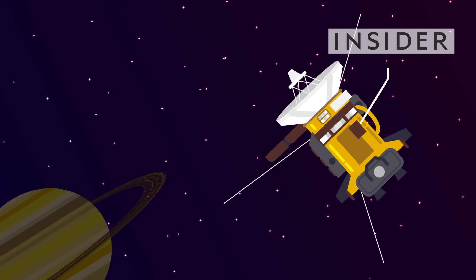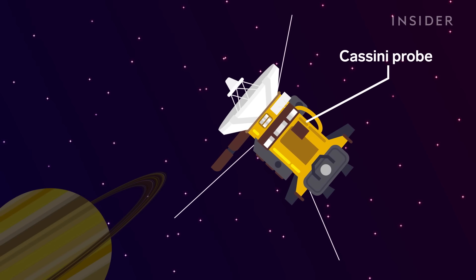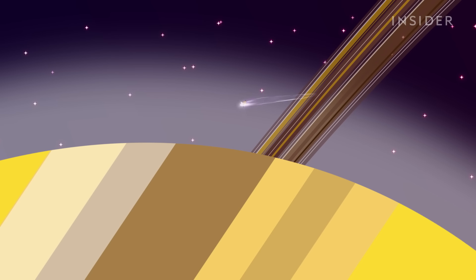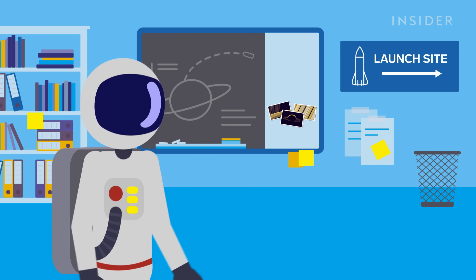In 2017, NASA's Cassini probe sent us our closest view of Saturn as it dove into the planet's stormy atmosphere. And the results were stunning. But what would it be like if humans made the journey in person?